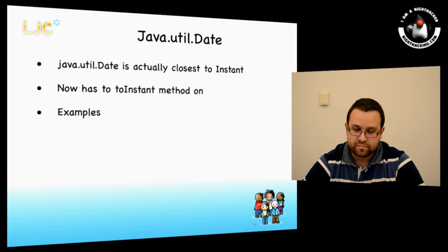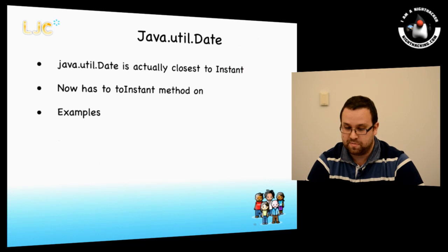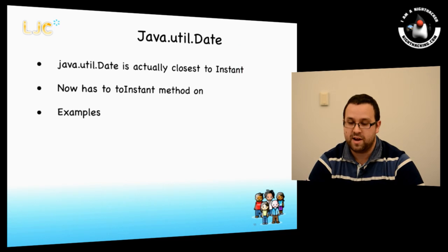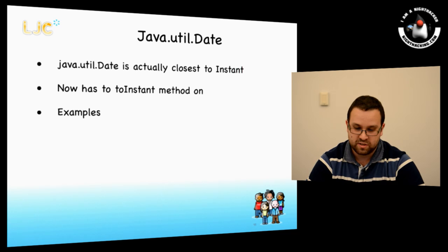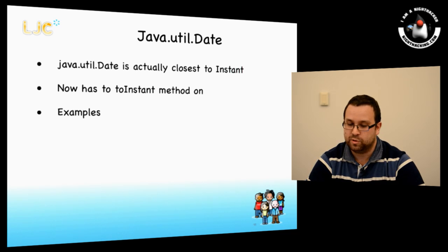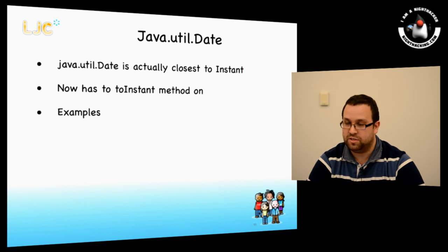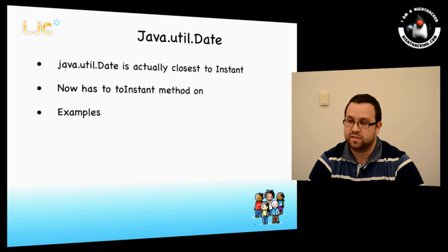java.util.Date is actually close to Instant, and in Java 8 it has a new method — toInstant() — which allows you to convert it to an Instant and start using the new APIs from there. Once you have an Instant you can convert to a ZonedDateTime using a ZoneId, and from there call toLocalDate() to get a LocalDate.